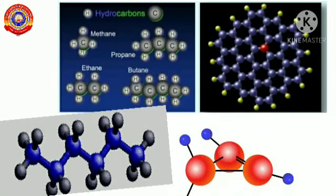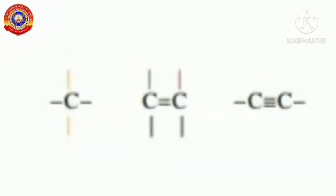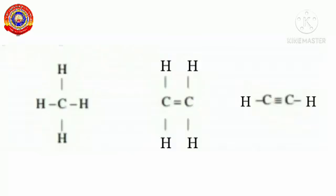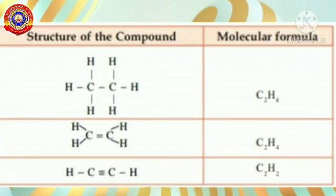Look at the representations. What is the valency of carbon? The valency of carbon is 4. Imagine that the hydrogen atoms are added to these structures — how will the structure look? Isn't it like this? Now observe certain organic compounds and their molecular formulae.